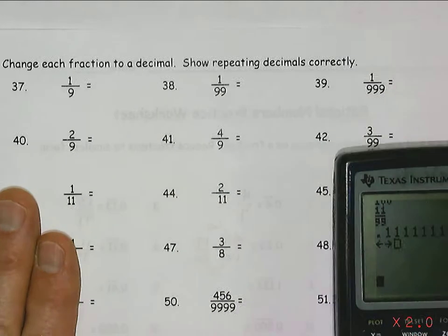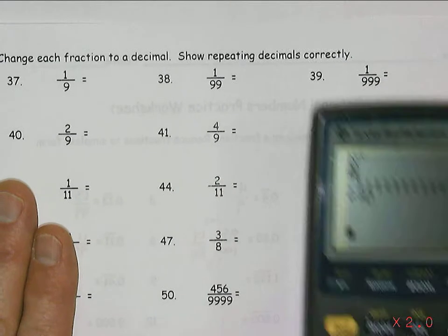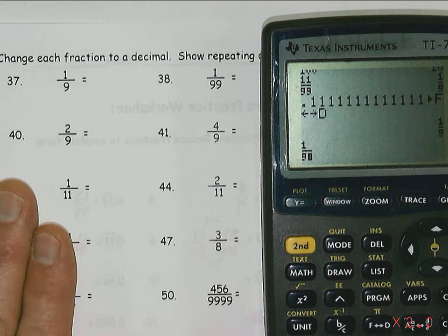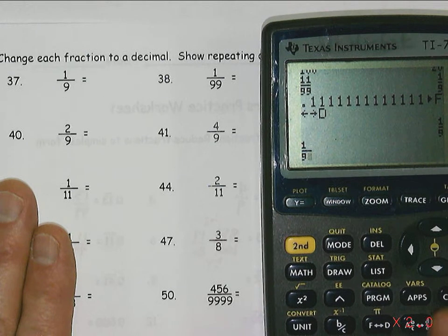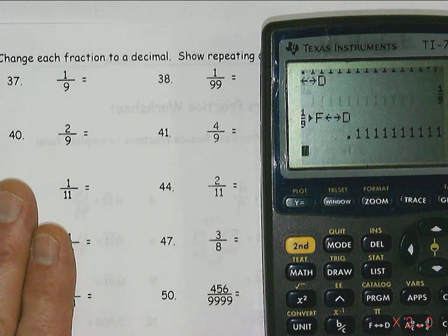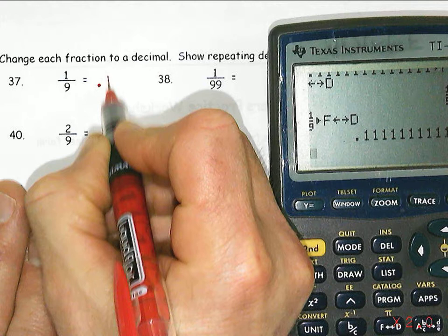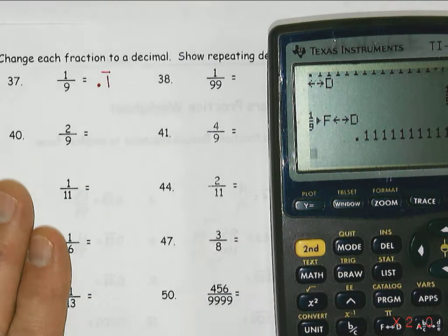If you're starting with the fraction to decimal, again we can just use the same technique, one-ninth using the fraction key on the calculator, and we'll go fraction to decimal, and then it shows us it's 0.1 repeating. And the way we show repeating decimal is put the number that repeats and the line over it.